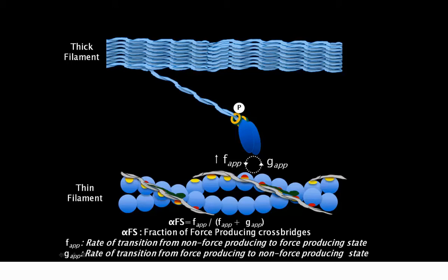Since the fraction of cross-bridges producing force is equal to F apparent divided by the sum of F apparent and G apparent, an increase in F apparent increases the fraction of force producing cross-bridges. Thus, regulatory light chain phosphorylation effectively acts as a catalyst for cross-bridge formation and force production.